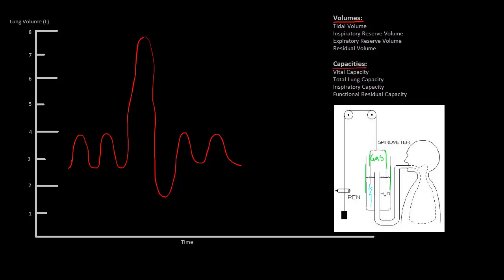Let's label the volumes in blue. First, tidal volume represents the normal volume of air moved in and out of the lungs in normal inspiration and expiration — we see this during normal breaths, and I'll label it TV. The inspiratory reserve volume is the amount of gas that can be taken into the lungs above a normal breath or above an end-inspiratory volume. We see that here when we asked the patient to take as deep a breath as they could. I'll label this IRV for inspiratory reserve volume.